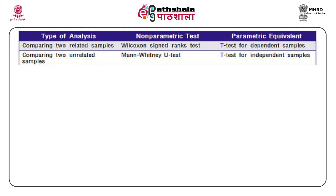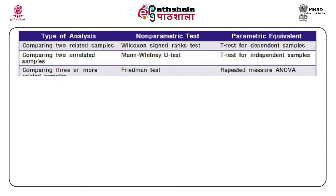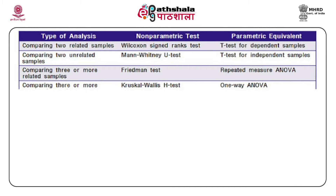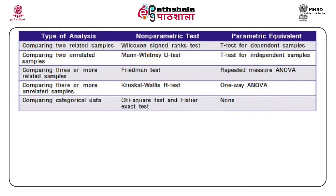When comparing three or more related samples, the non-parametric test would be the Friedman test, and the parametric equivalent would be repeated measures ANOVA or analysis of variance. When the type of analysis is comparing categorical data, the non-parametric tests would be the chi-square test and the Fisher exact test.